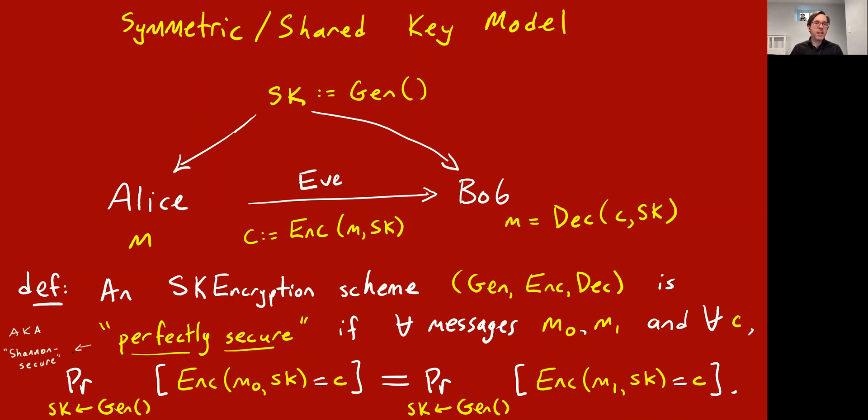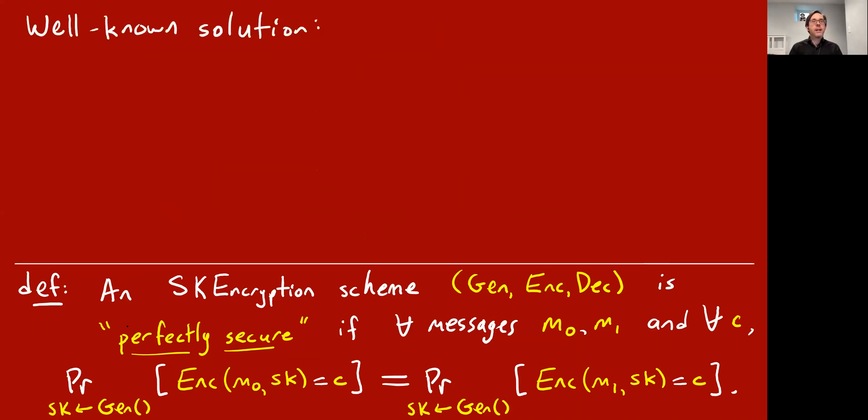This is also called Shannon security because our hero, Claude Shannon, also invented this notion back in the early days, in the 40s. And there's a well-known solution to this problem. Perhaps you've seen it before. If you have, feel free to type it into the chat. OTP, yes, one-time pad. In fact, we discussed it in the last lecture. The one-time pad achieves perfect security, and it's a simple solution.